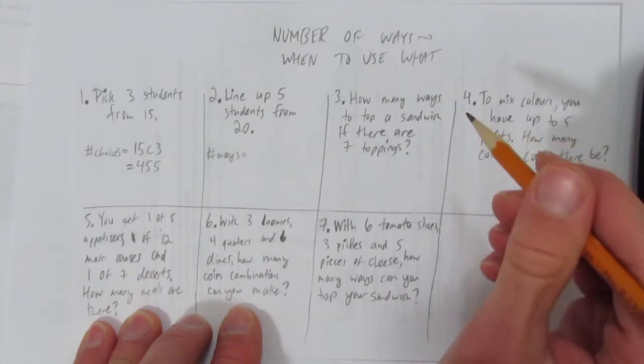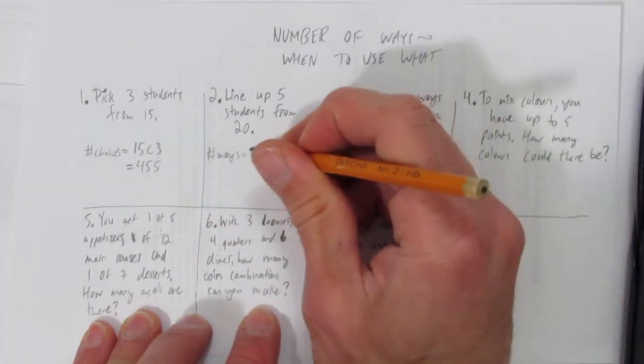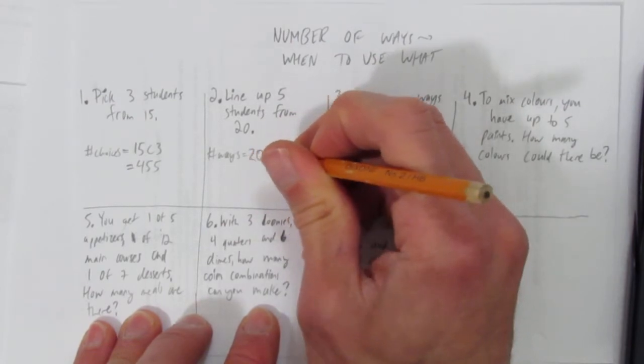then student five. That's a different line-up than five, four, three, two, one. In other words, order definitely matters. When order matters, it's permutations.